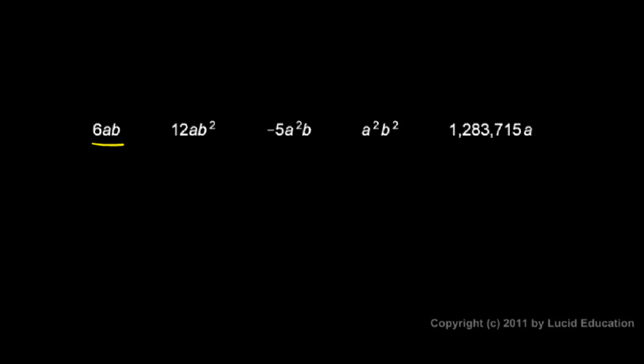Now look at these. We have 6AB and we have 12AB squared. That AB squared is not quite the same thing as AB, because the B over here is squared and here it's not. So those are different variable parts — these are not like terms. In all of these, the variable part is a little bit different. This is A squared B, which is different from AB squared, and different from AB. And this is A squared B squared. And over here on the last one, we just have an A. The variable part is different from all the others — none of these are like terms. We could say they are unlike terms.